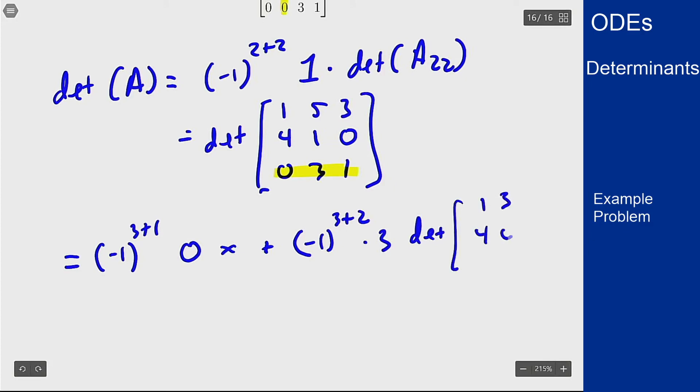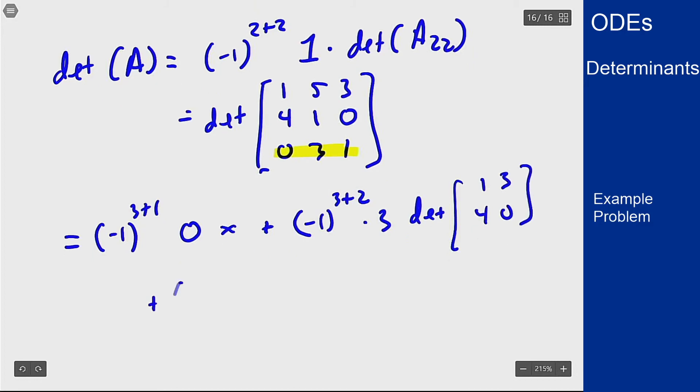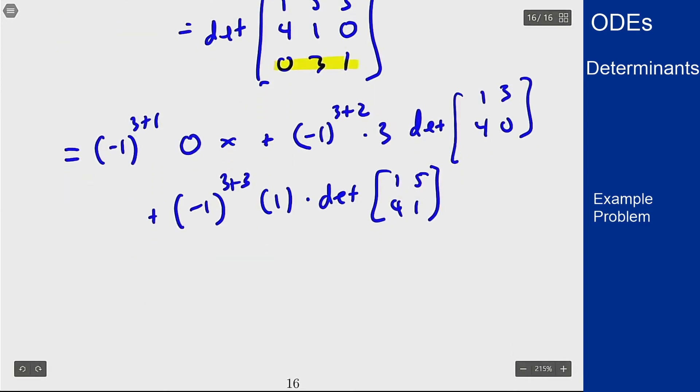Plus negative 1 to the 3 plus 3, times the 1 that's there, times the determinant of that minor, which if I take out that row and that column gets me the part in the top corner, [1 5; 4 1], which means I am left with negative 1 to the 5th, which is negative 1.